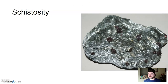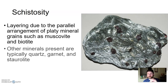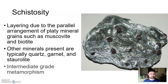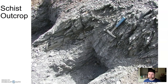Schistosity — with a little bit more heat and pressure — is a medium to high-grade metamorphism. It's a layering look due to the parallel arrangement of platy mineral grains such as muscovite and biotite, which gives it a shiny, sparkly appearance. Other minerals that may be present are typically quartz, garnet, and staurolite — that crossed mineral we saw in the lab on minerals. This is an intermediate to medium-to-high grade of metamorphism.